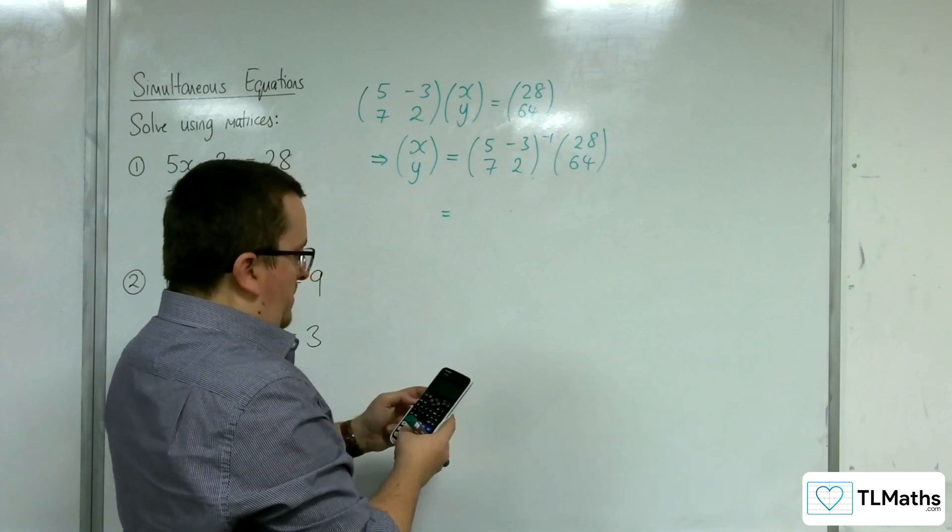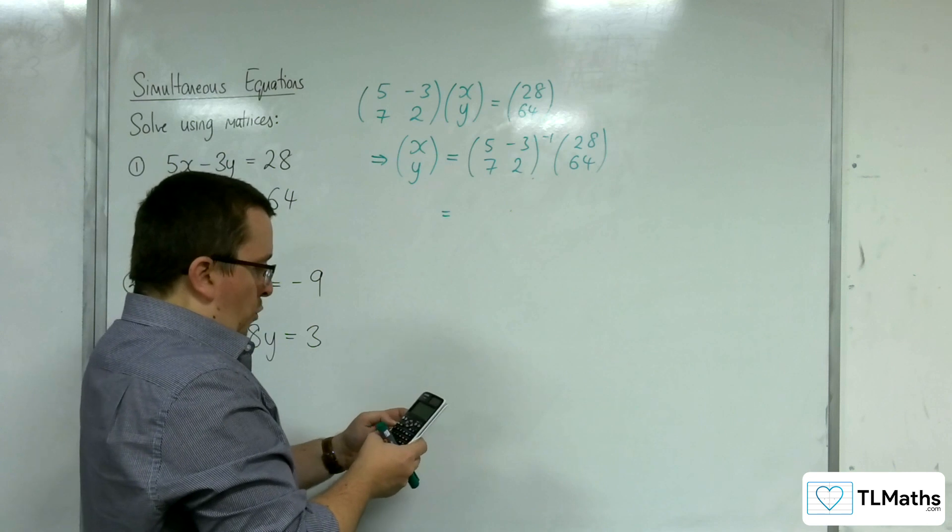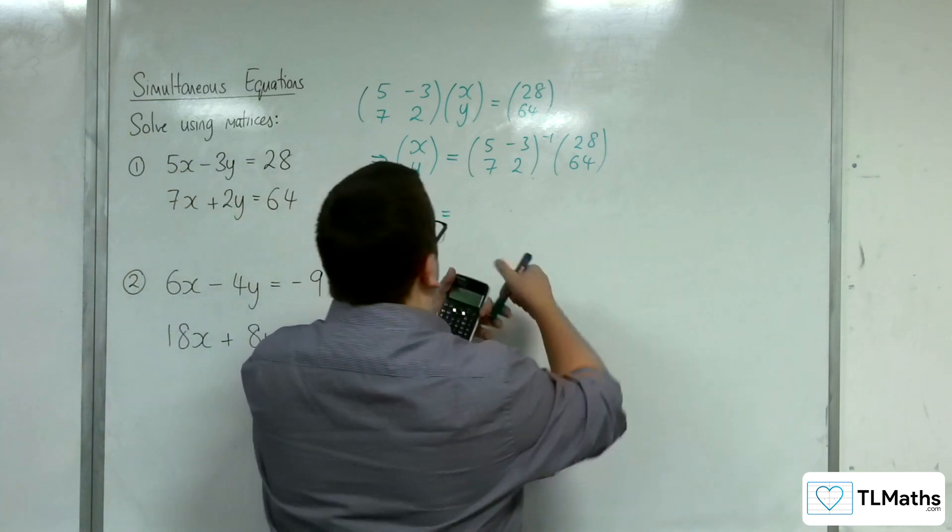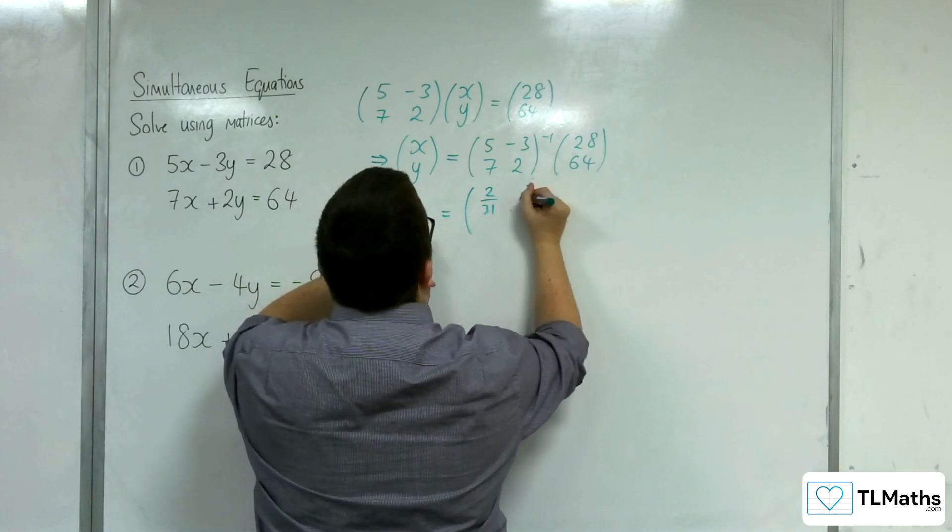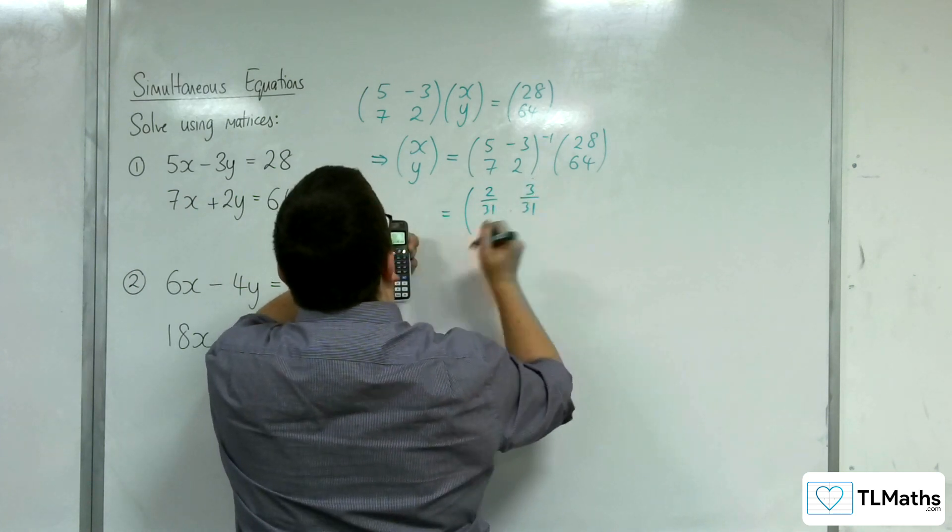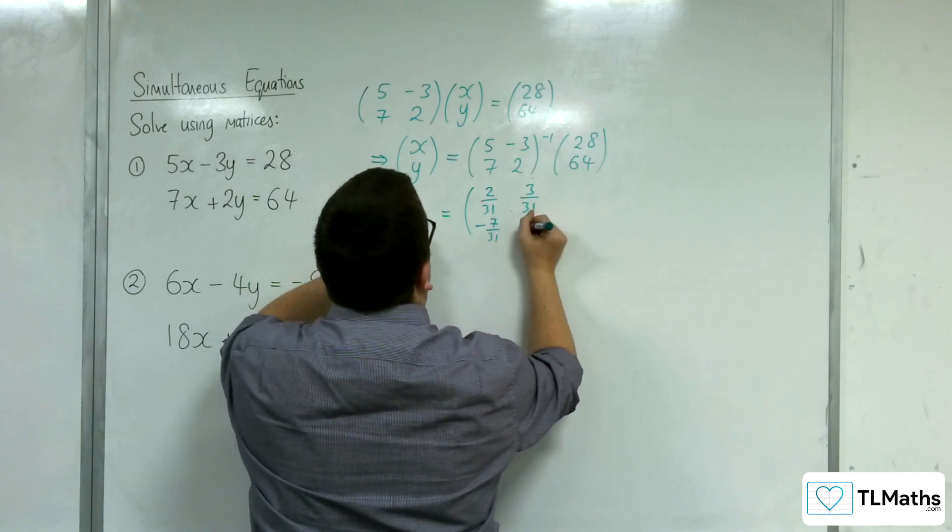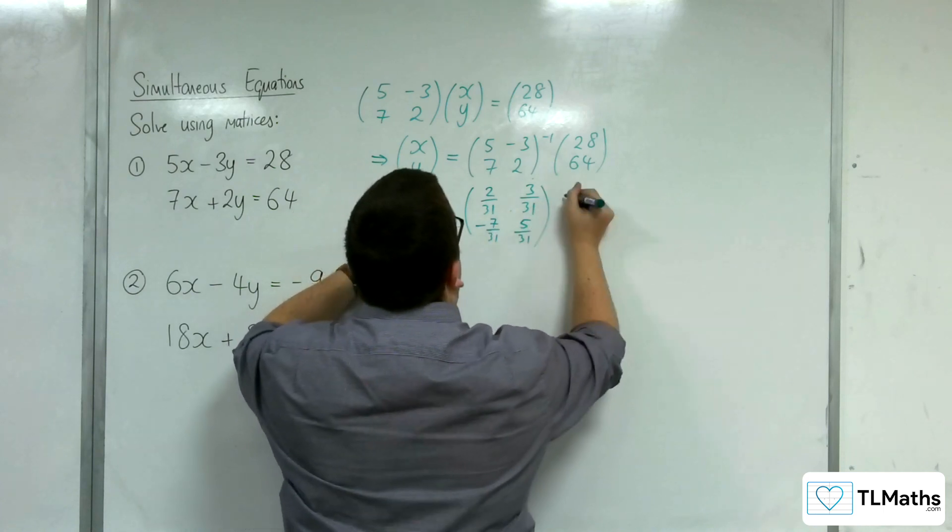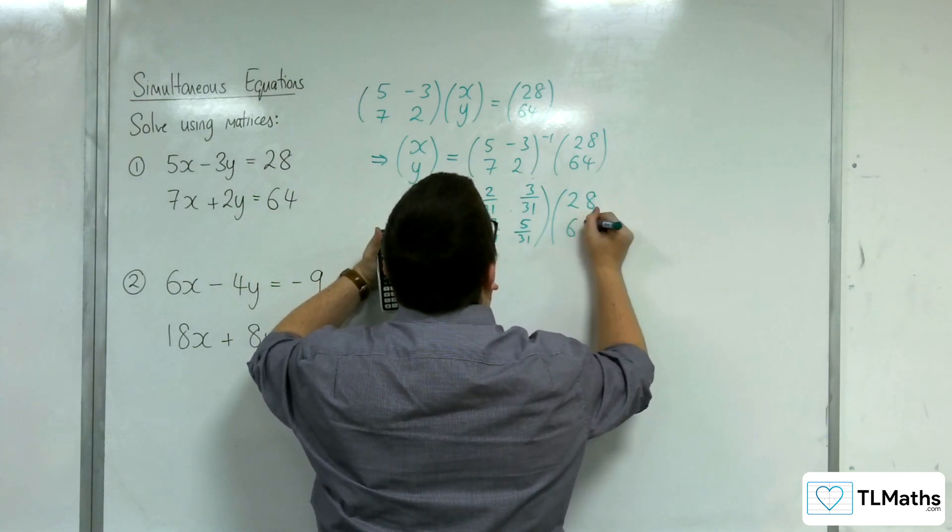The first thing I'm going to do is make sure I've written down what that actually is. We're getting 2/31, 3/31, -7/31, and 5/31. That's being applied against 28, 64.